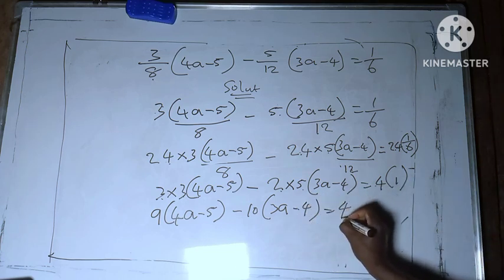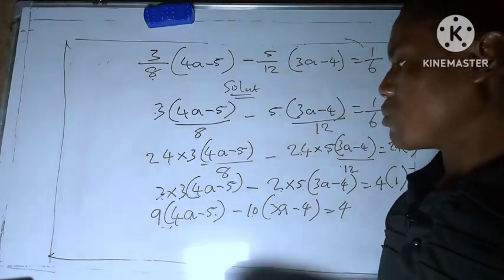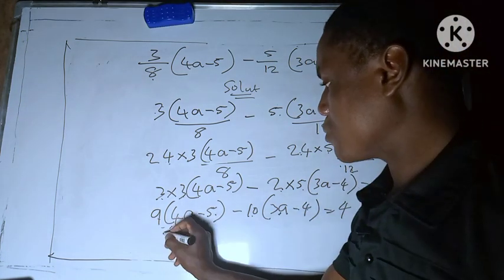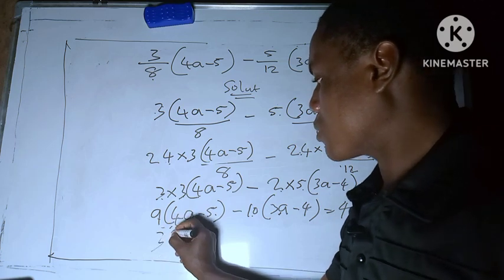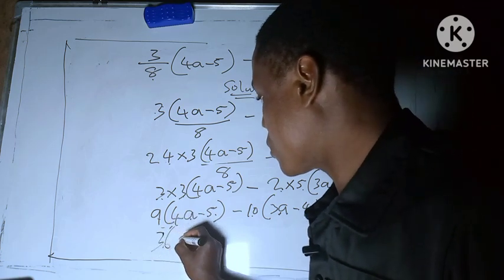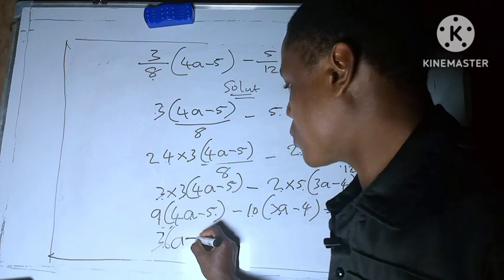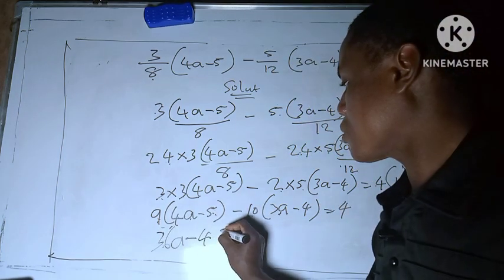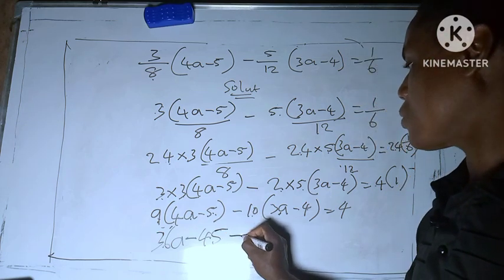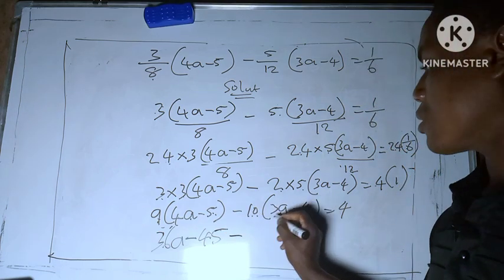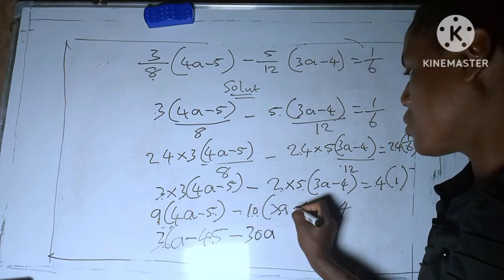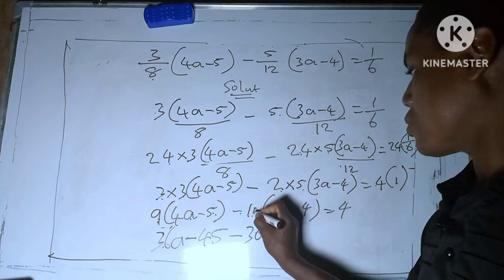So let's multiply: 9 times 4a to give us 36a, minus 9 times 5 is 45, minus 10 times 3a to give us 30a. Minus times minus is plus, so 10 times 4 to give us 40.